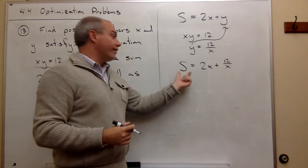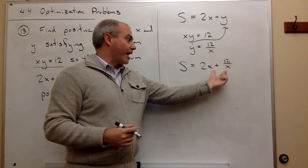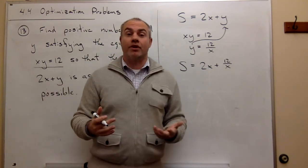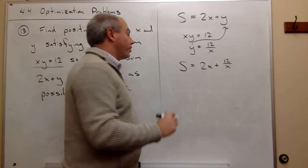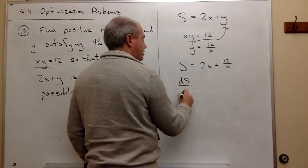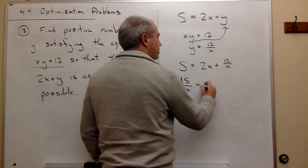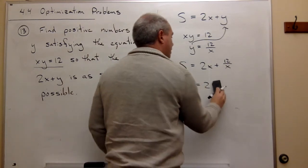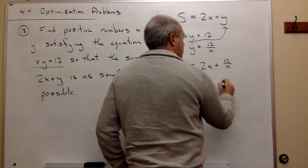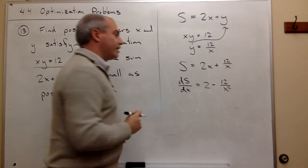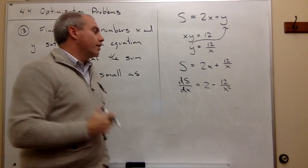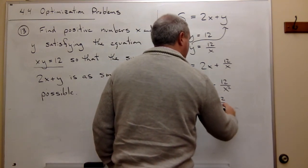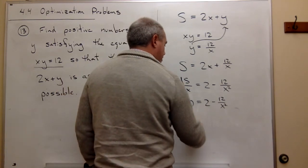Now I can take the derivative of S with respect to the variable x, set it equal to 0, solve for x, do all the things that I'm used to doing for finding critical points and then see if it's a local max or min. So let's take the derivative. I get that the derivative of S with respect to x is equal to 2 plus, let's see, this is 12x^(-1), so the derivative would be -12x^(-2) or -12/x². Now I'd like to set that equal to 0, so I get 0 = 2 - 12/x². I can move the 12 over x² to the other side, so I cross multiply that.